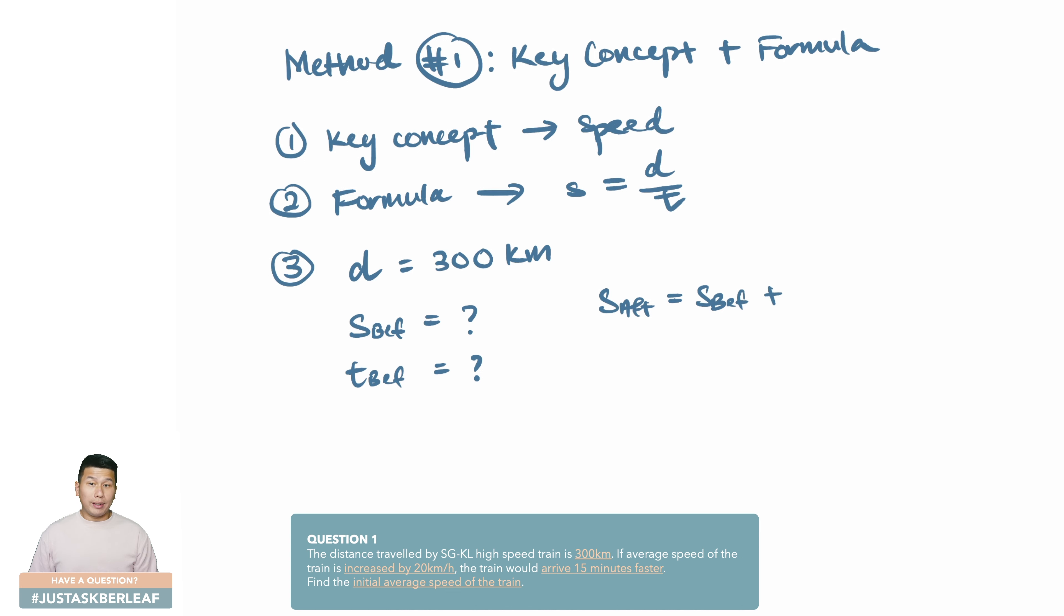The speed before, to us we do not know. Let me denote this as s subscript bf equals to a question mark because we do not know. The time taken before is equals to unknown as well. As for the speed after, you can see that it's actually a speed before plus 20, and this is in km per hour.